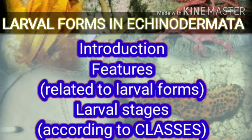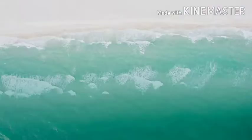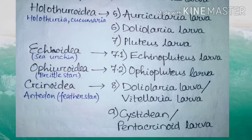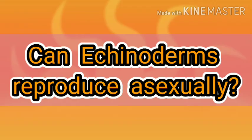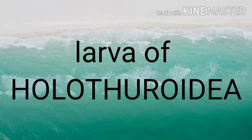Today we are going to discuss the larvae of the remaining classes: auricularia and doliolaria larvae of Holothuroidea, echinopluteus larvae of Echinoidea, ophiopluteus larvae of Ophiuroidea, and doliolaria and pentacrinoid larvae of Crinoidea. There is also a question for you today: can echinoderms reproduce asexually? Stay tuned till the end. Now, class Holothuroidea demonstrates two larval stages, namely auricularia and doliolaria larva.